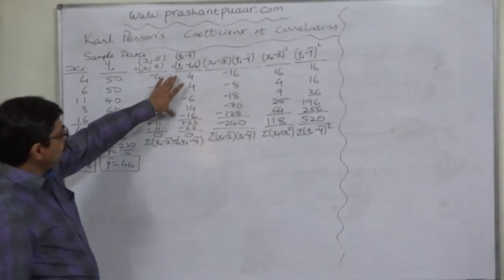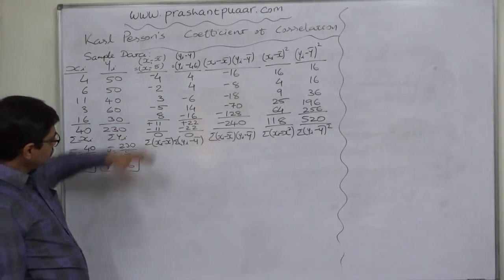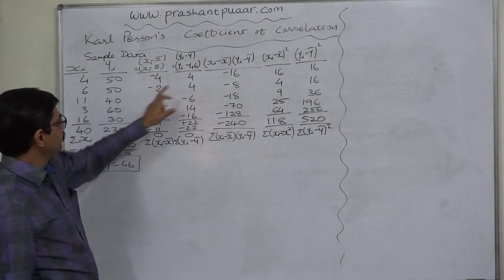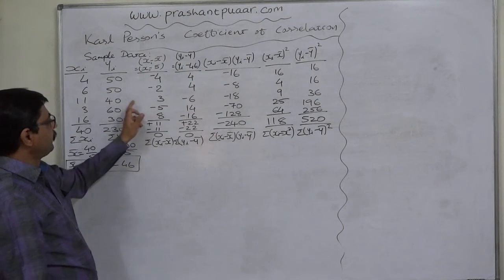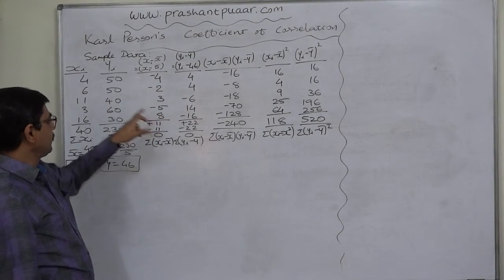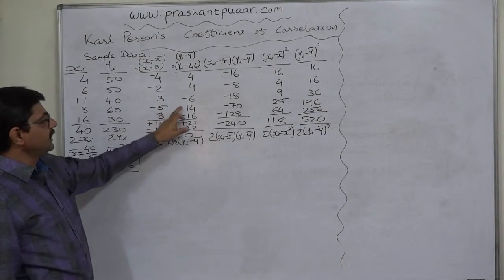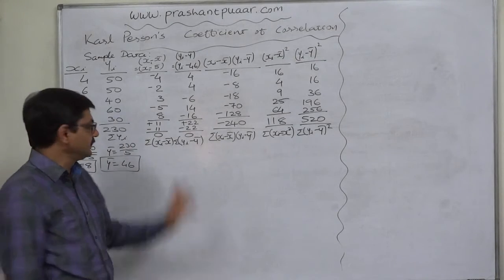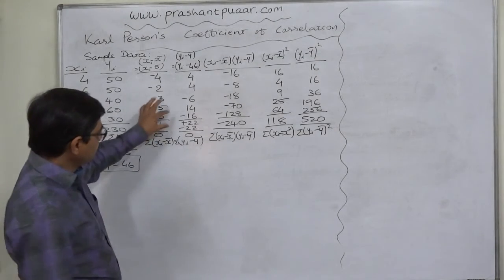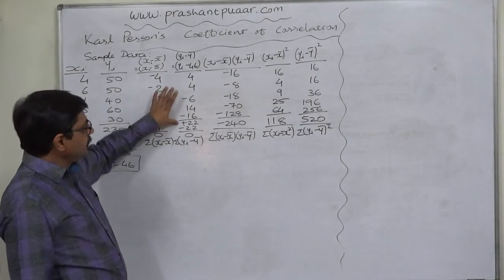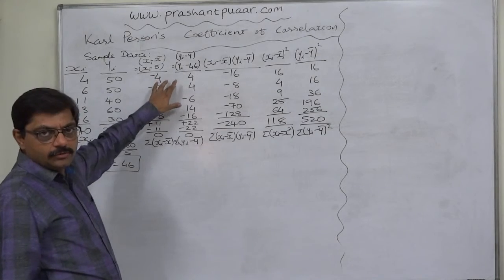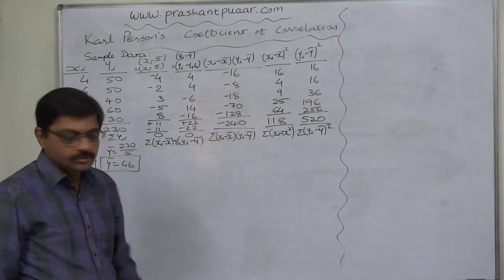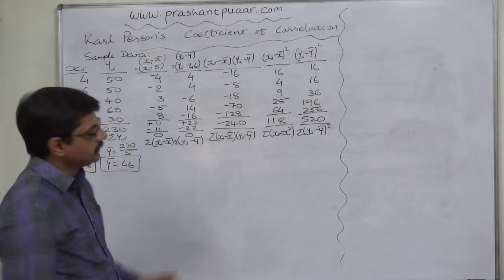Similarly, for y, we subtract the mean 46: 50−46=4, again 4, 40−46=−6, 60−46=14, 30−46=−16. The summation of positive values is 22, negative values 22, and the grand total is 0. So this column can be treated as correct.